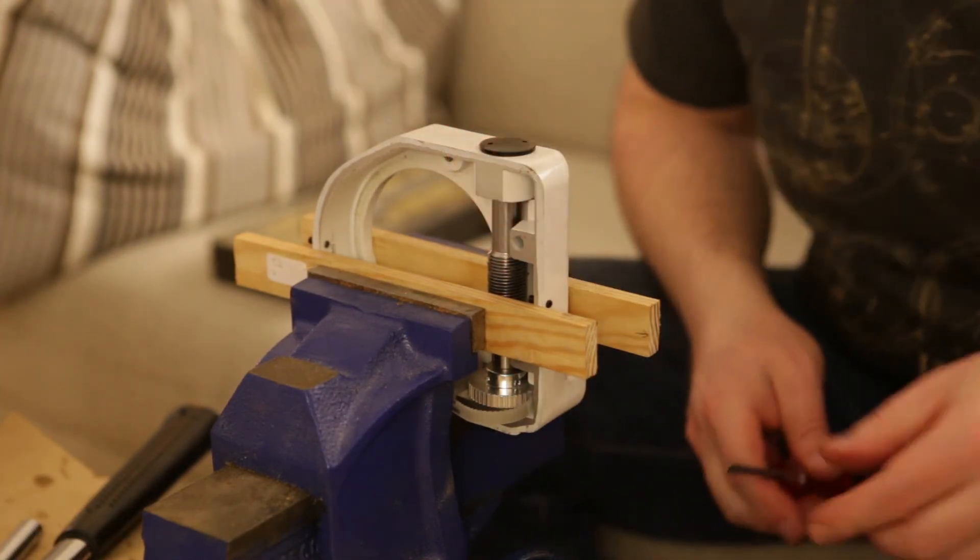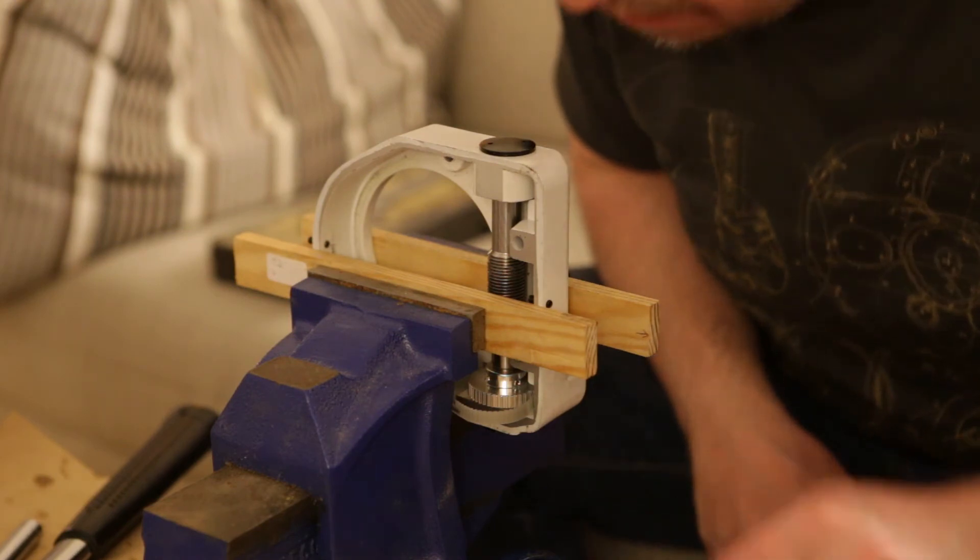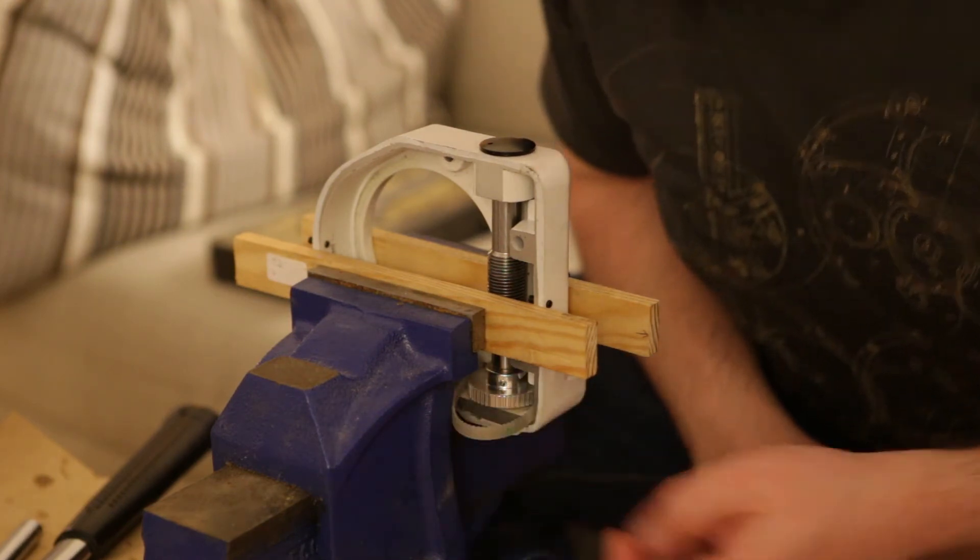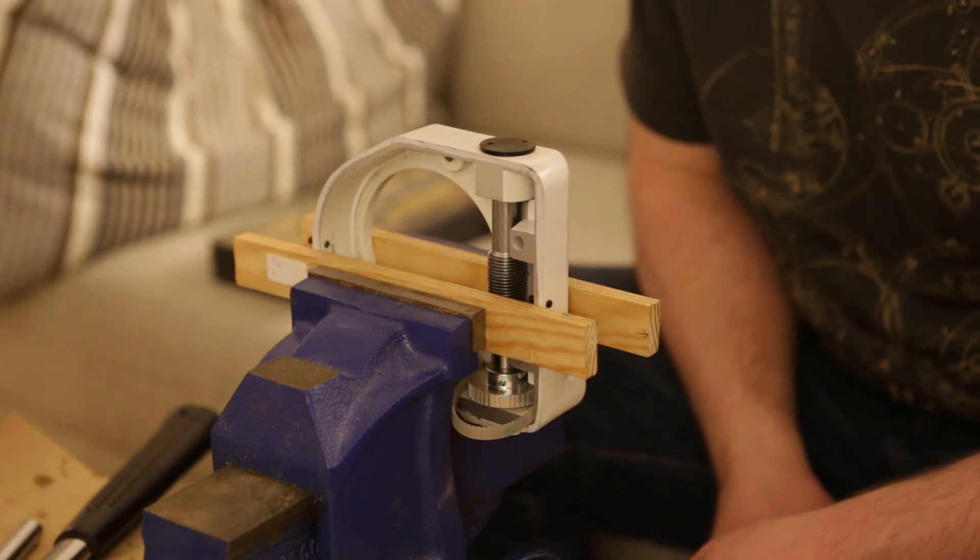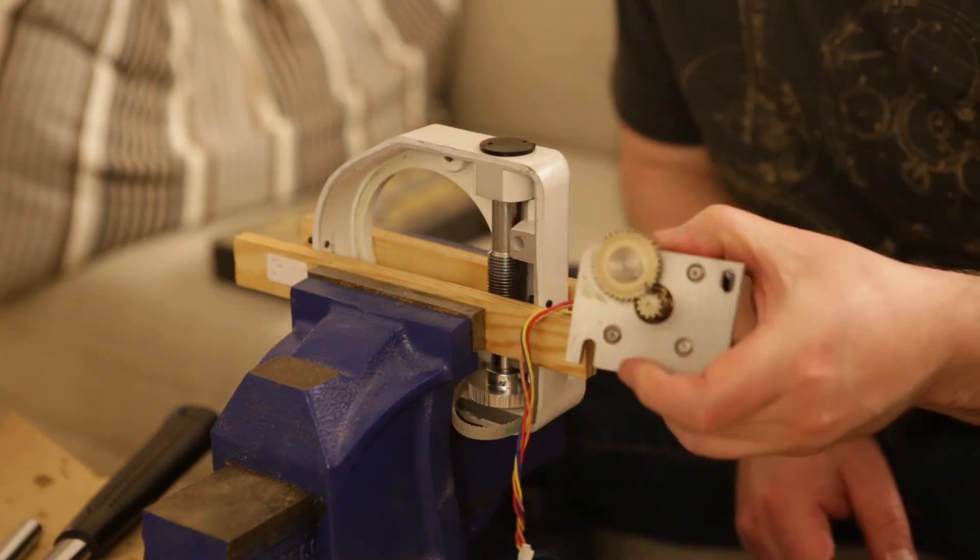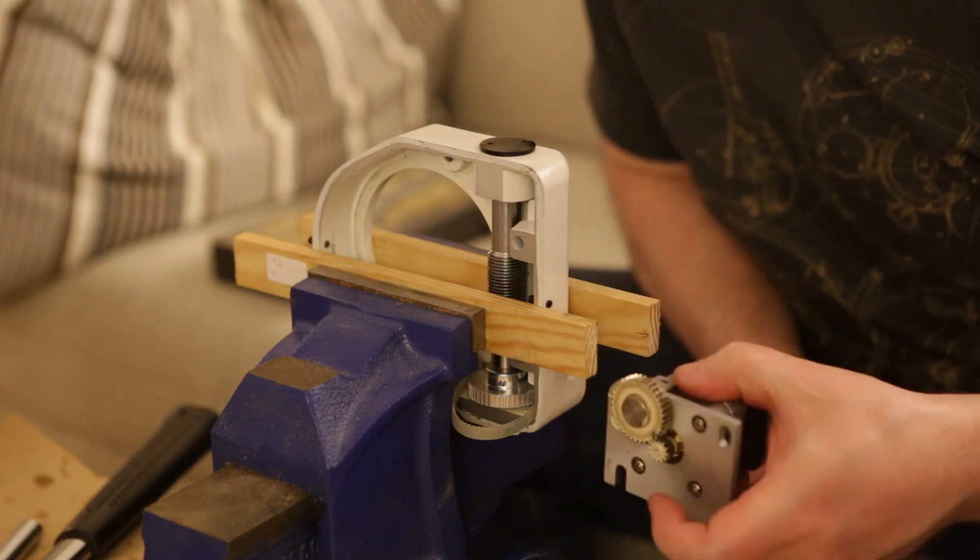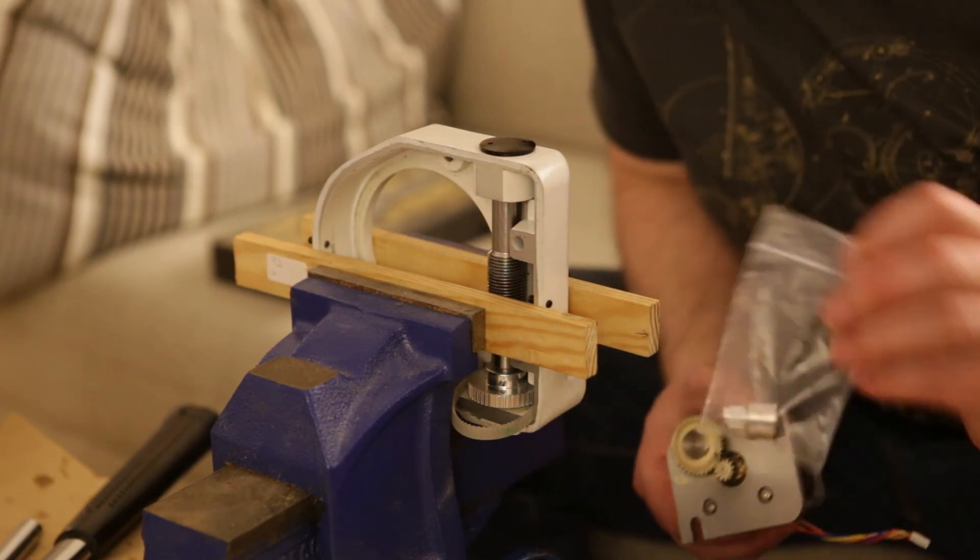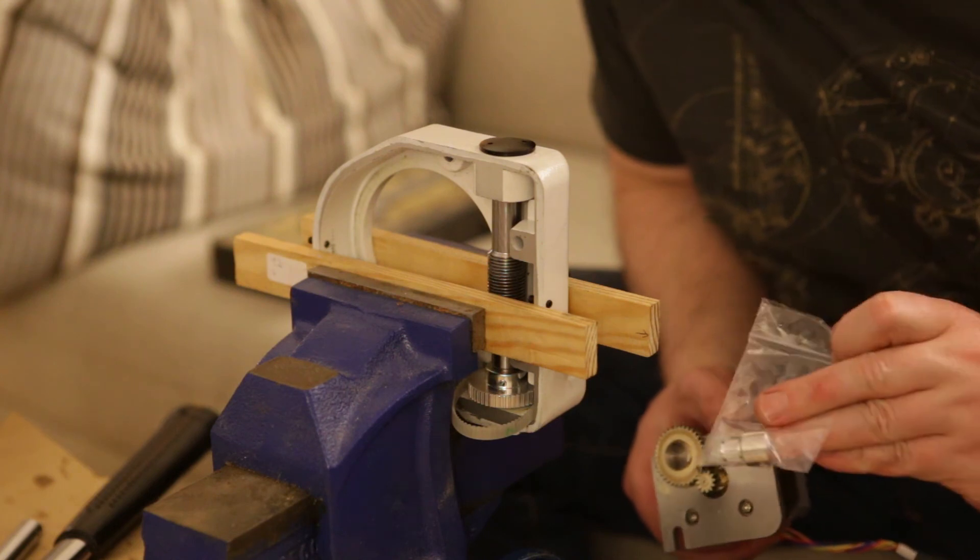And that's the modification done on the declination axis. All we've got to do is put it back together again and replace the gears and the motors themselves with these timing pulleys. And we're almost there.